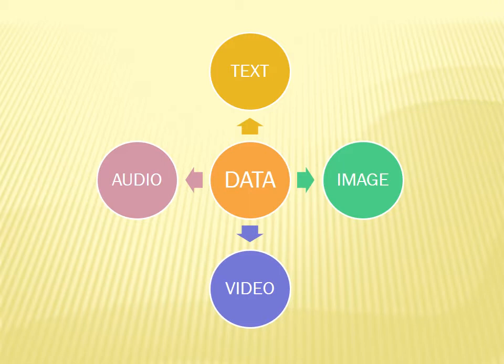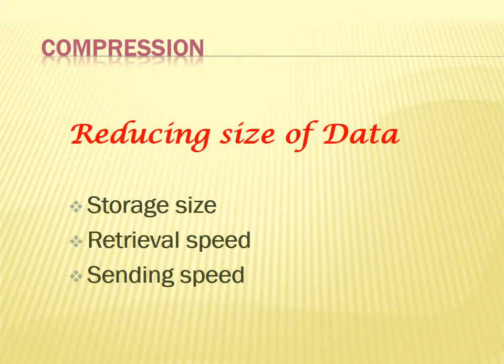Now we have understood the first word of the subject — data. Data Compression and Encryption will give you insight about compression and encryption techniques for all these data types. Moving to the second word, 'compression' clearly tells us it is nothing but a reduction in the size of data. When we reduce data size, storage space also reduces. Similarly, retrieval speed improves — lesser file size means less time to download an email attachment — and sending speed also increases.